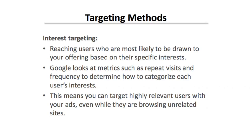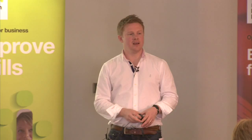You then have targeting based on people's interests — reaching people most likely to be drawn by your specific offering. Google looks at metrics such as repeat visits and frequency to determine users' interests. Google essentially pigeonholes all of us: this person likes this, this person likes that. So you can target highly relevant users with your ads even when they're not browsing a site related to what you're doing. It's very different to topic and contextual targeting — this is putting ads in front of people based on previous ticked boxes to the algorithm.